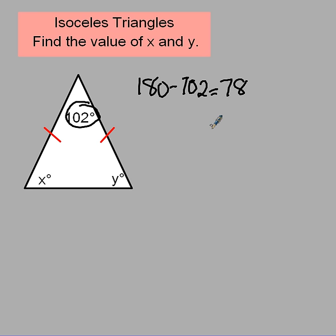So I've got 78. Now x and y are both the same thing, so I've got to split that between both x and y. And since they're both the same thing, instead of just saying x plus y equals 78...